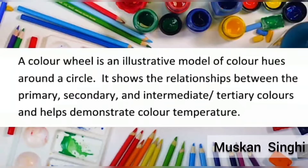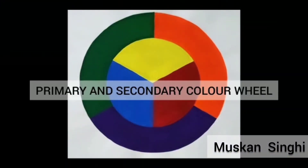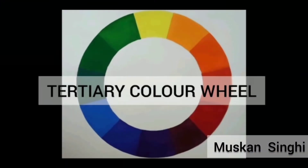There are two types of color wheel. First, the primary and secondary color wheel. Second, the tertiary color wheel.